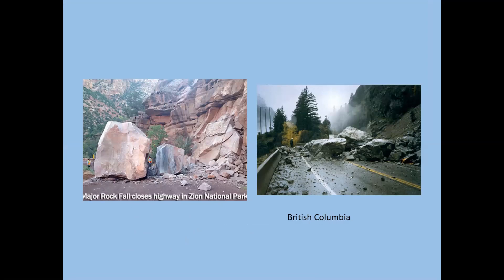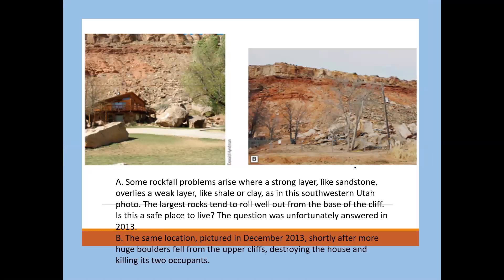Rock falls occur where roads are built in steep rocky mountain areas — this is Zion National Park in Utah and British Columbia. Here is an example of what you would not want to do: build your house under an unstable cliff. This is a perfect scenario for disaster — very hard sandstone at the top with a thin bed of shale below it. Shale is a weaker rock, and as these weaker layers weather away, the strong rock above breaks apart and falls.